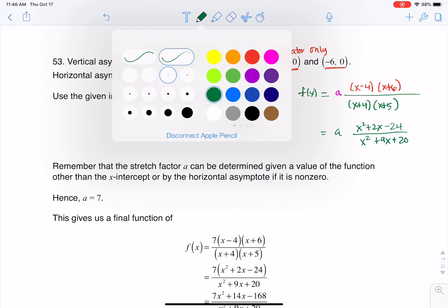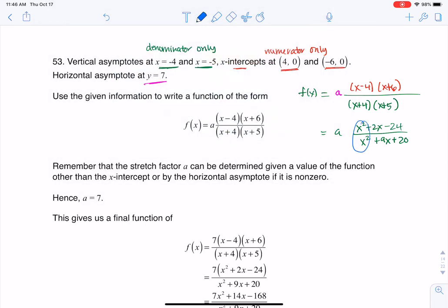And right now if I just focus on these two lead terms, you can see that basically I have an x squared over an x squared, which gets me to 1 for the end behavior, but really I want it to be 7. So what that means is that my a value must be 7.